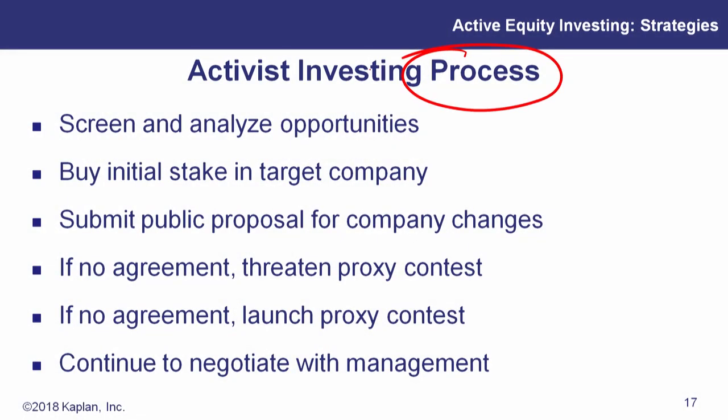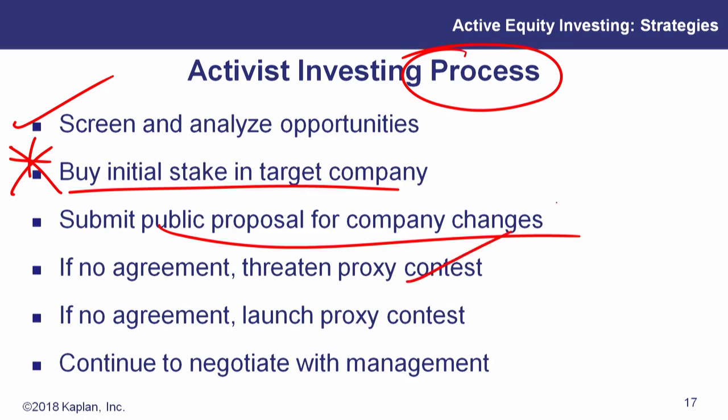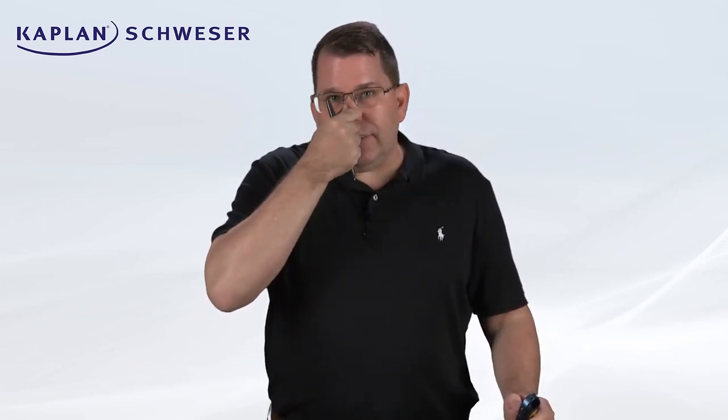So let's talk about the activist investors. What is their general process? Just like quantitative, they've got to screen and analyze opportunities in stocks. Then they have to target a company and buy a stake into this company. Then they're going to submit public proposals for company changes. If there's no agreement, they may have to threaten a proxy war. They might have to launch a proxy contest. They're going to negotiate with management. So this, just like the word activism implies, this isn't just buying a stock and hoping it goes up. This is you are going to make yourself an integral part of the machine of this company, and you're going to make changes that you think the company needs to do to survive.